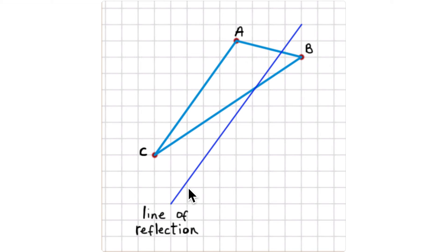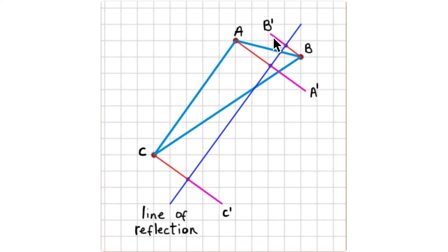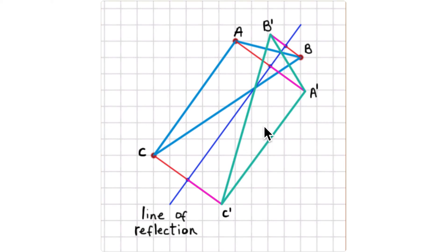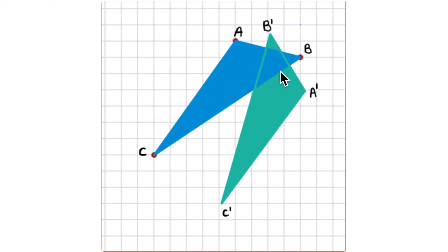Let's try a more interesting example with an odd, diagonal line of reflection. Connect each point with a line perpendicular to the line of reflection, then repeat that length on the other side. B prime is located here and A prime is here — corresponding points are equal distances from the line. Connect A prime, B prime, C prime in order, shade it in, and remove the line of reflection.